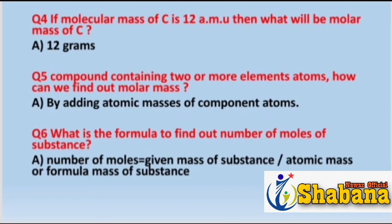Question number four: if the atomic mass of carbon is 12 AMU (atomic mass unit), then what will be the molar mass of carbon? The atomic mass of carbon is 12 AMU. Since 1 AMU equals 1 gram per mole, the molar mass of carbon is equal to 12 grams.